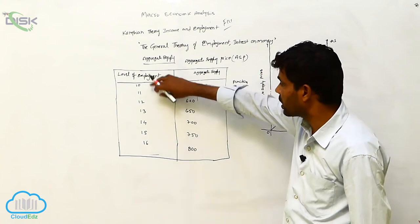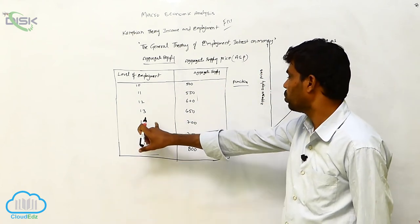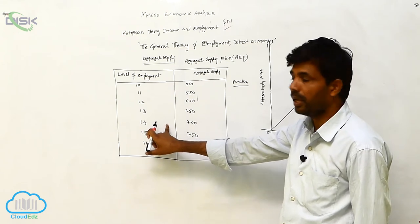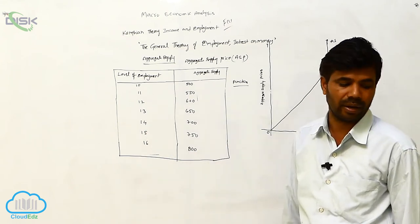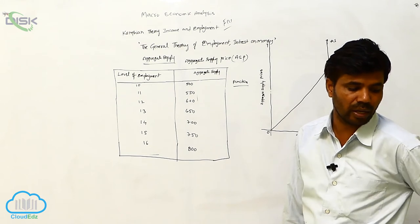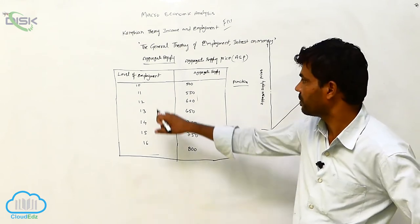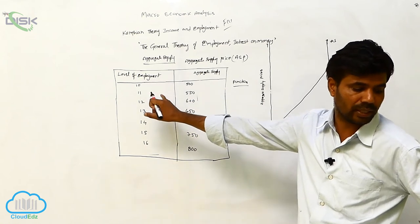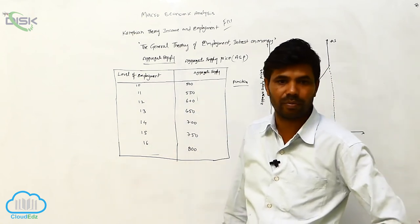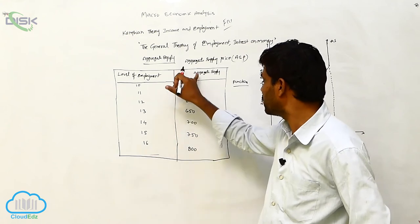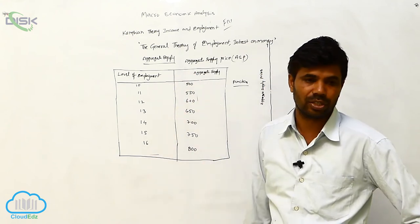Moreover, when the price level increases to 14 rupees, what will happen — the supply increases to 700. Gradually increasing — the aggregate supply also reaches 800. This explains the diagram.